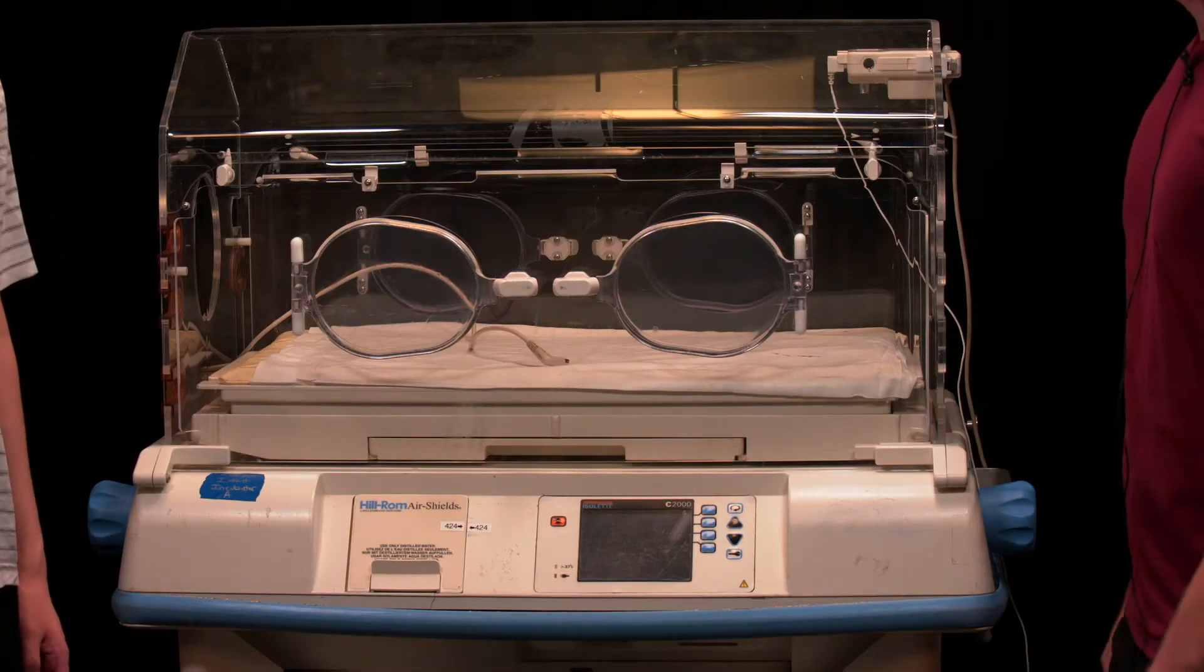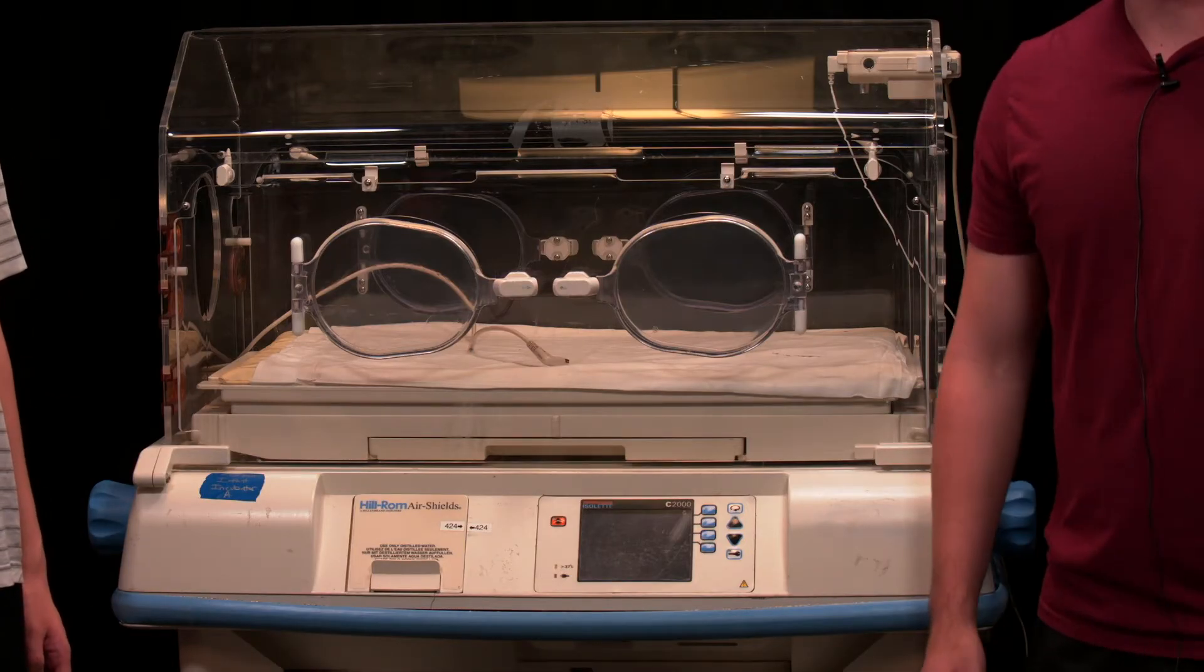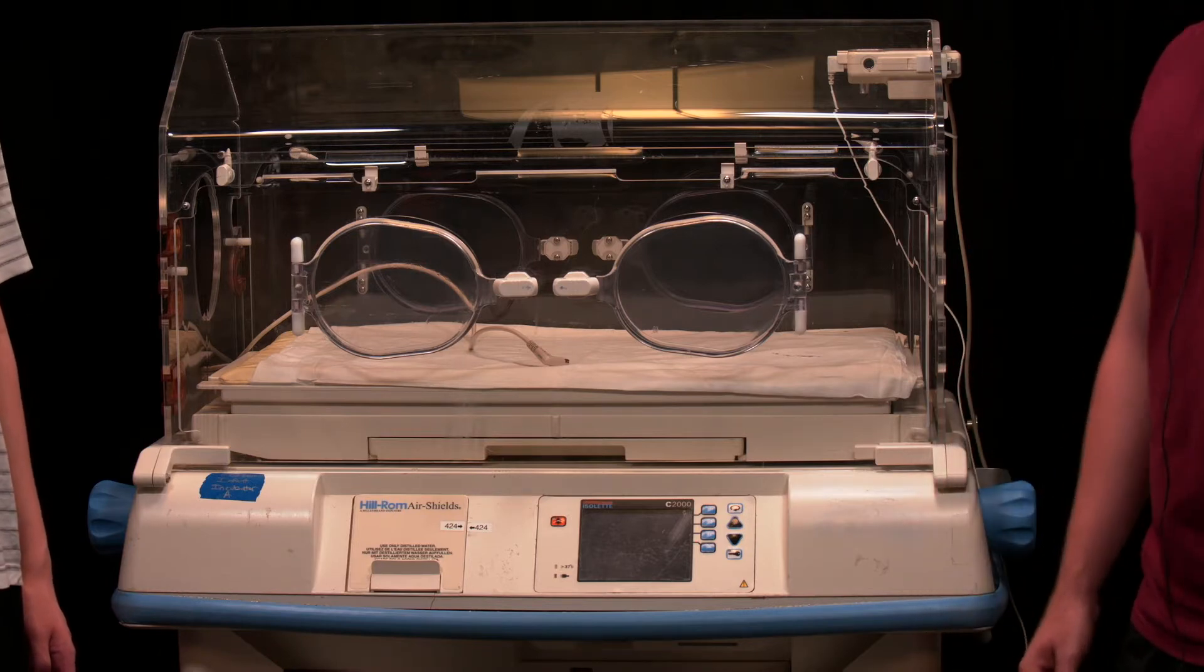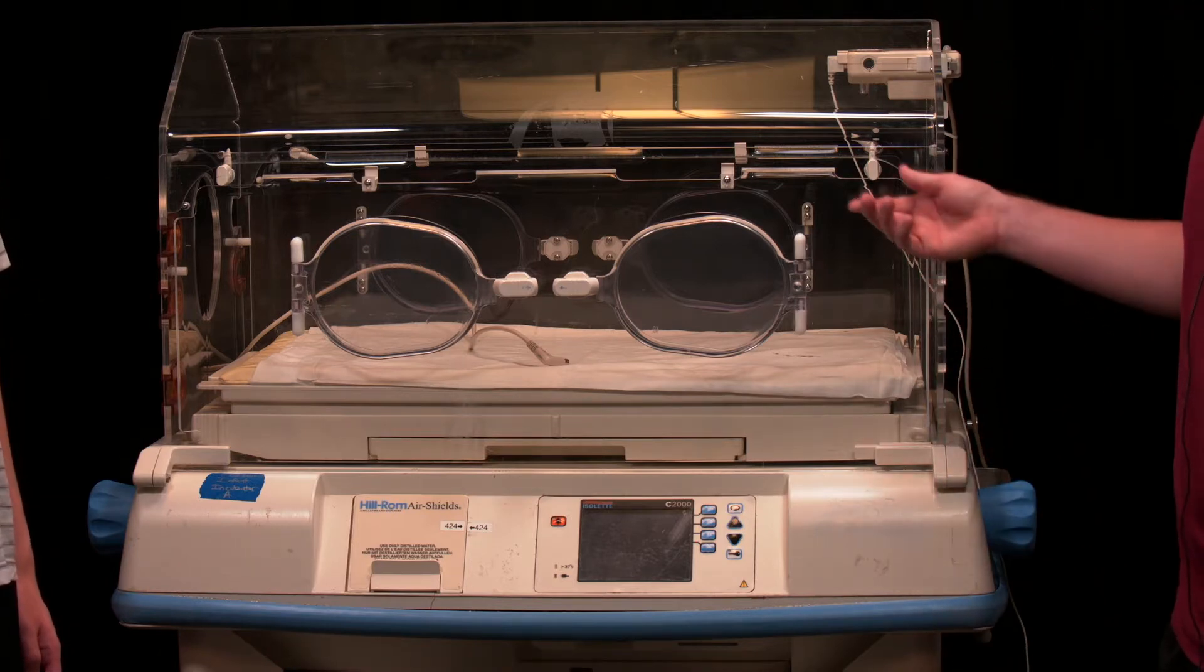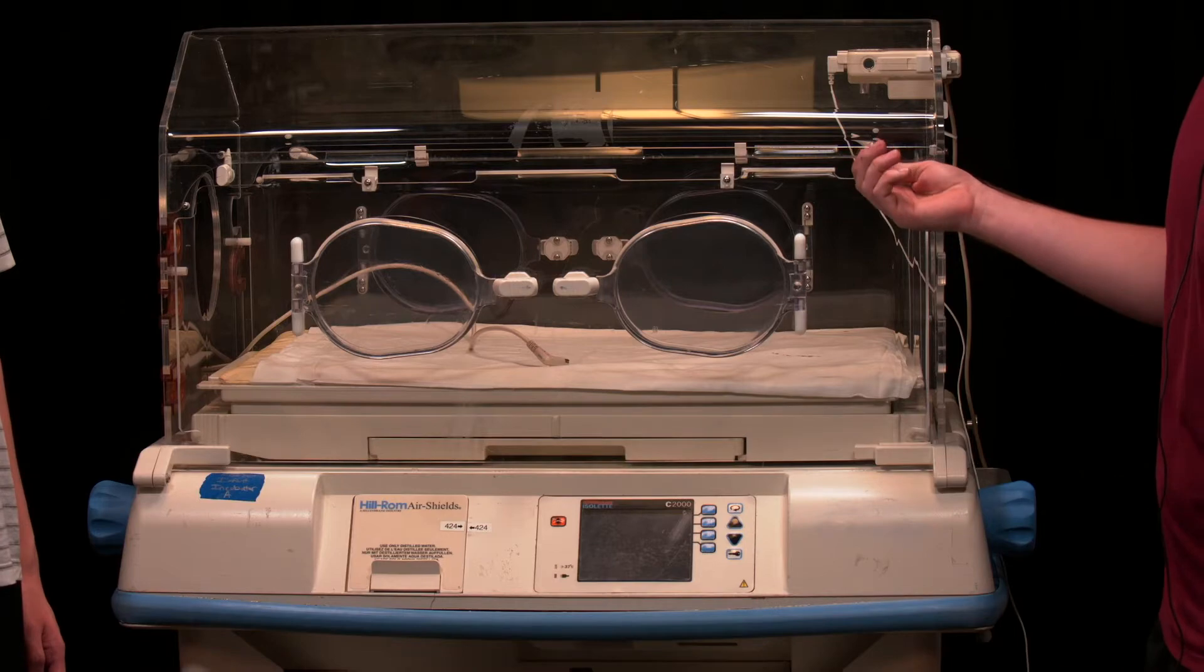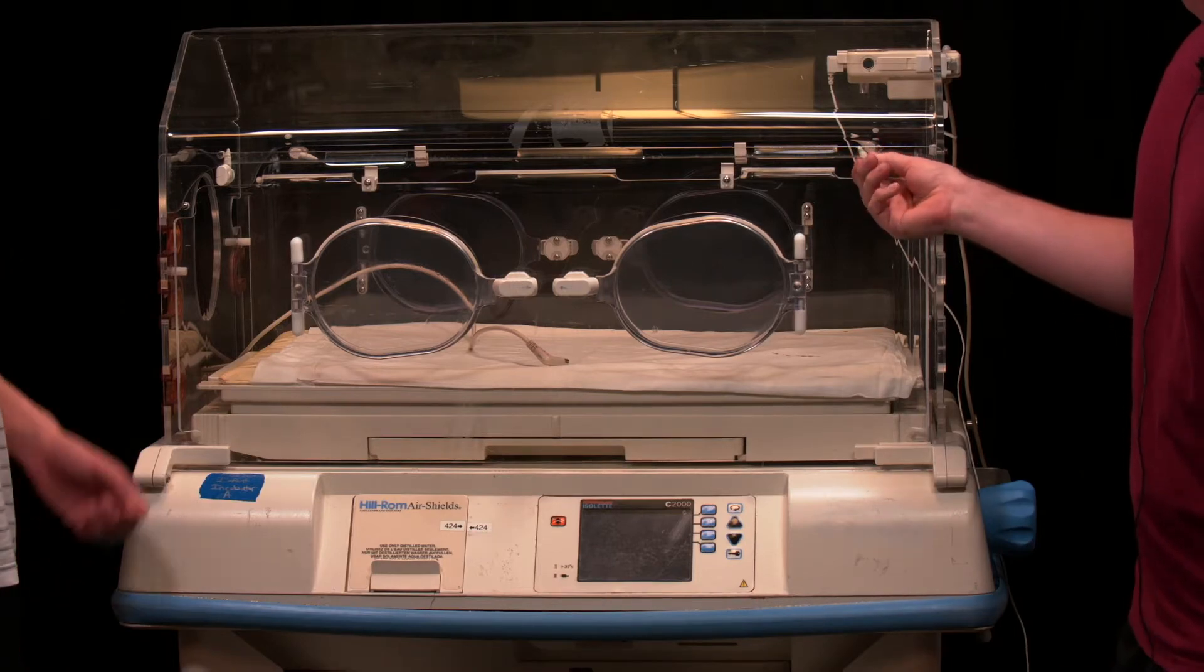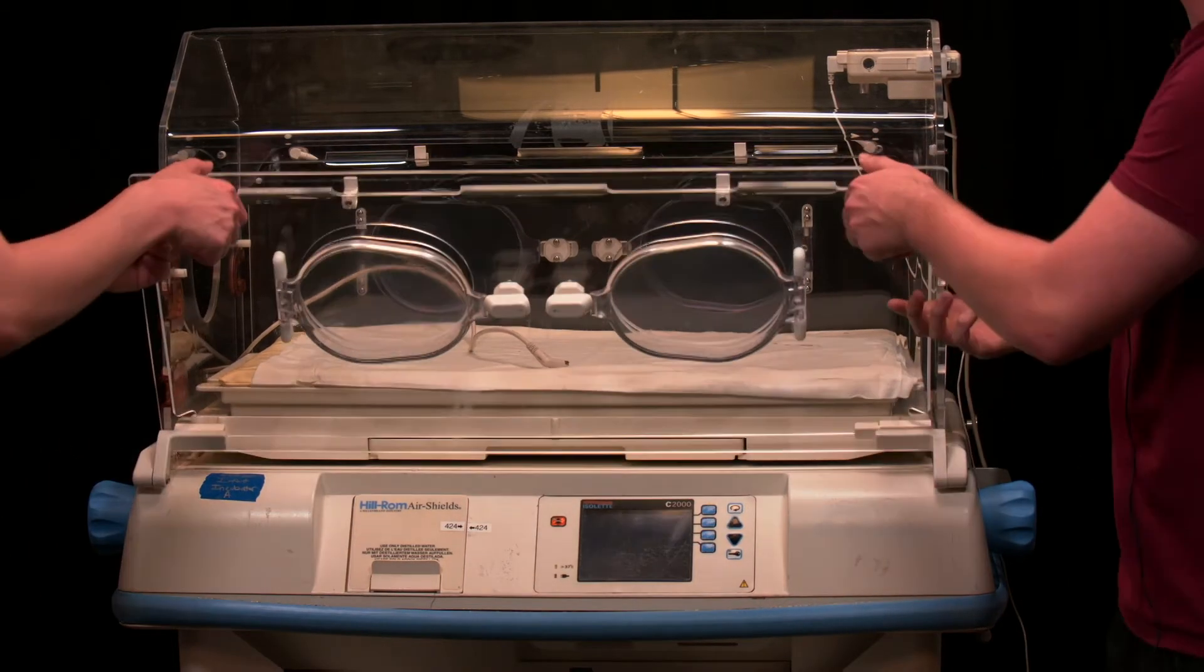First thing you've got to do when working with an electrical device is to unplug it before you open it up. The next thing we've got to do to start getting to the heater impeller is to unscrew the latches in the front. There we go. And then pull down the lid.